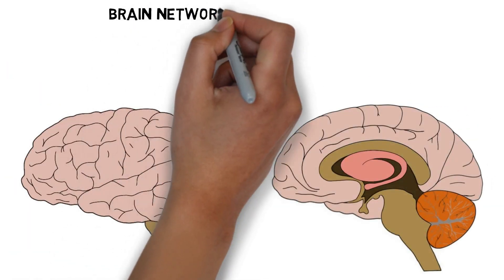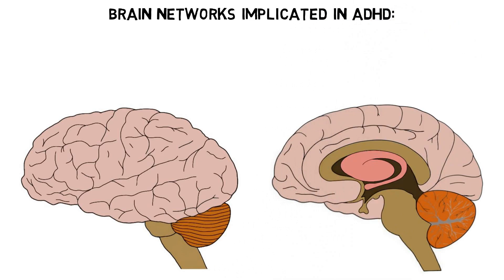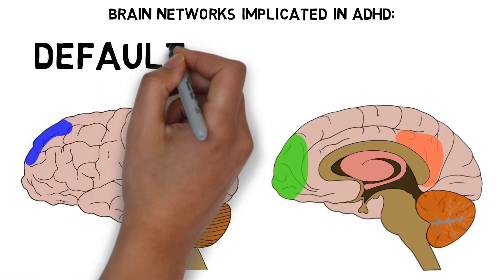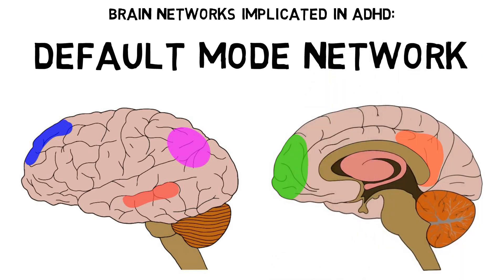Much of the recent research into the neuroscience of ADHD has focused on understanding the brain networks that might underlie different aspects of cognitive function in ADHD. One example is the default mode network, which is a collection of brain regions that is more active during mind-wandering and introspection, and less active when a person is attempting to complete a specific task. Studies have found that people with ADHD have atypical connectivity in the default mode network, which might be associated with distractibility.